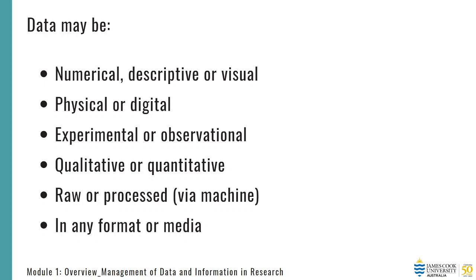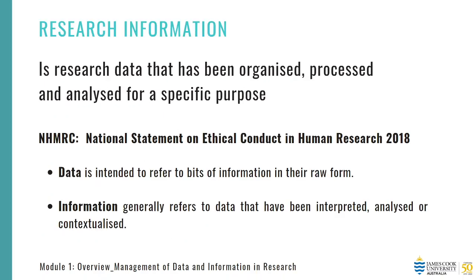But most importantly, what we need to remember is that it's the foundation of your research and it needs to be protected. So if research data are the raw and unprocessed facts, research information is data that has been processed and organised into a more useful format. It's also sometimes referred to as derived data. It's important to understand this difference as it has implications for what you actually need to keep to support your research output, your publication or your thesis.